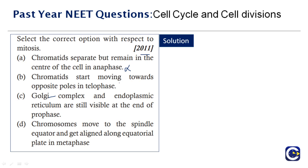Option B — 'chromatids start moving towards opposite poles in telophase' — is also wrong. Option C — 'Golgi complex and endoplasmic reticulum are still visible at the end of prophase' — is wrong because they are not visible then.